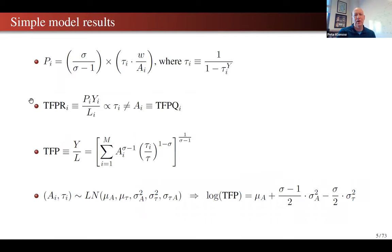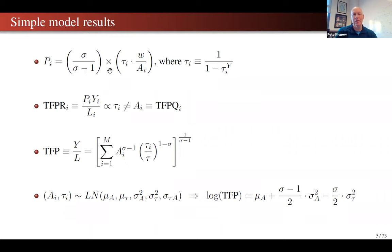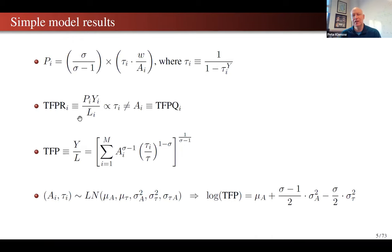Picture firms as monopolistically competitive — each takes input prices for its L as given, takes the price index P as given, and even aggregate production as given. There's a fixed resource constraint. In this economy, firms would all charge the same markup if not for the taus. I'm calling tau 'one over one minus the revenue tax' — a higher revenue tax means a higher tau, so firms charge higher prices if they face higher tau.